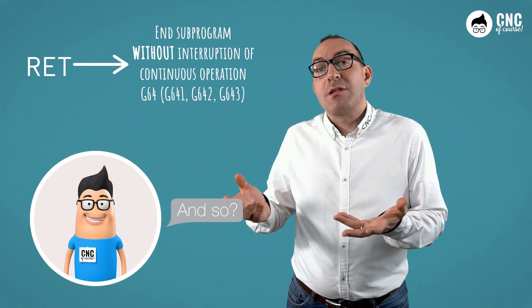So, Paolo, I usually use RET because if I want to remove the G64 function, which is almost always active, I do it by programming a G60 or a similar function without the subprogram itself resetting the G60.